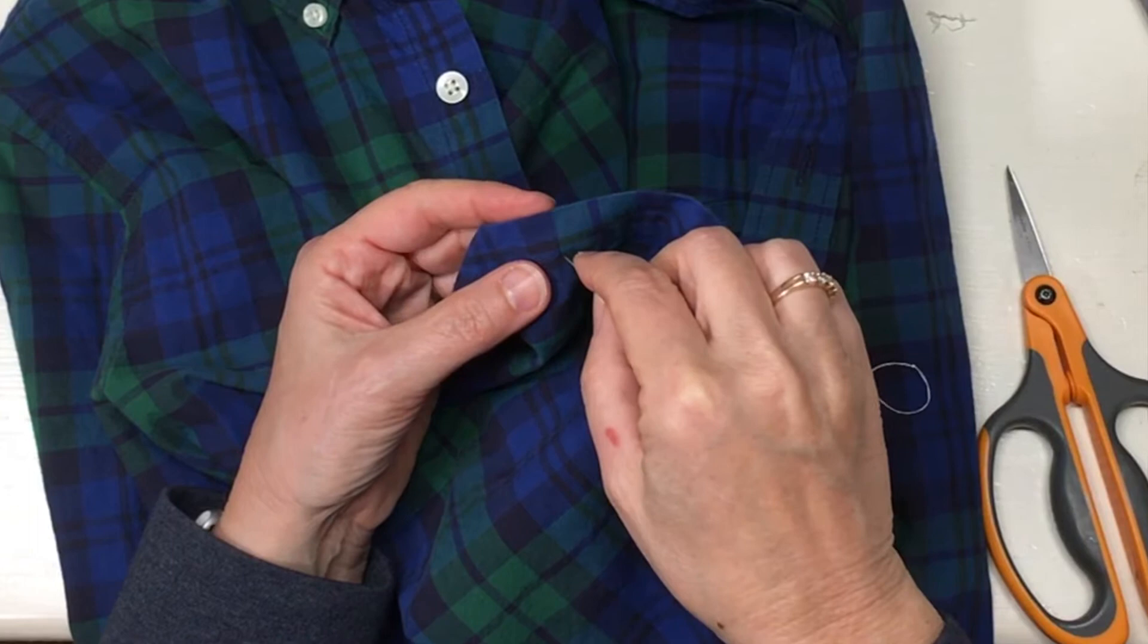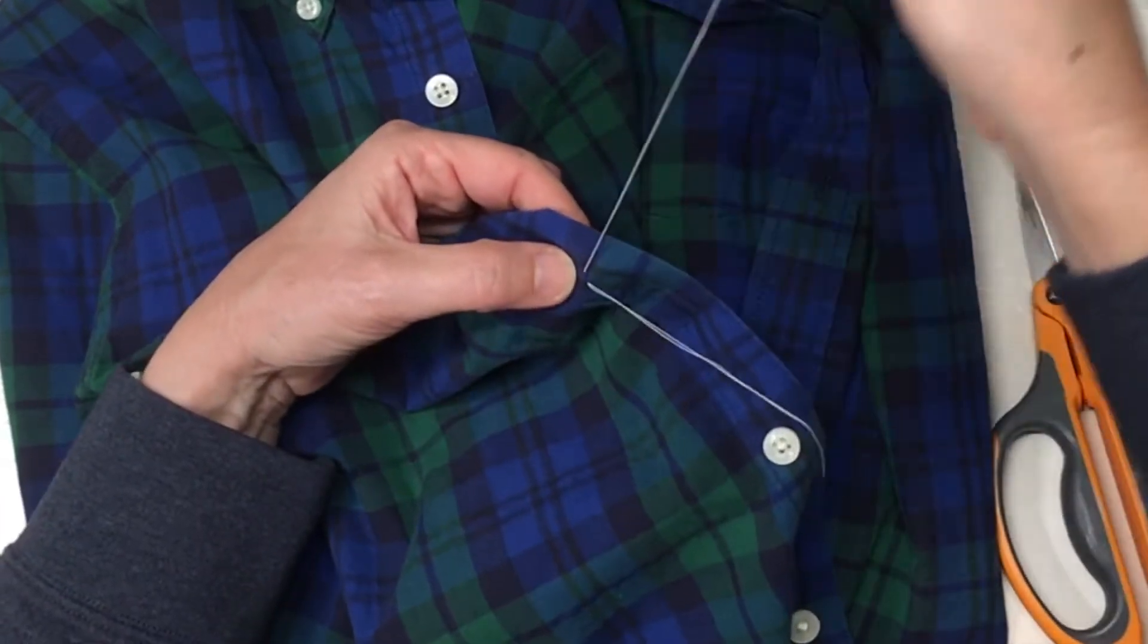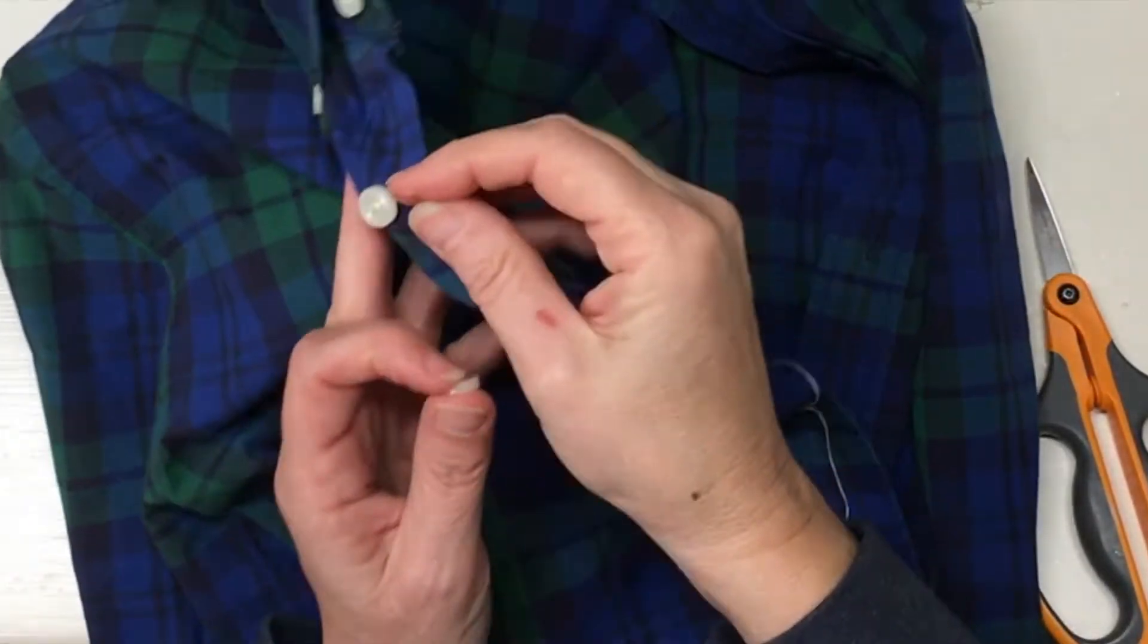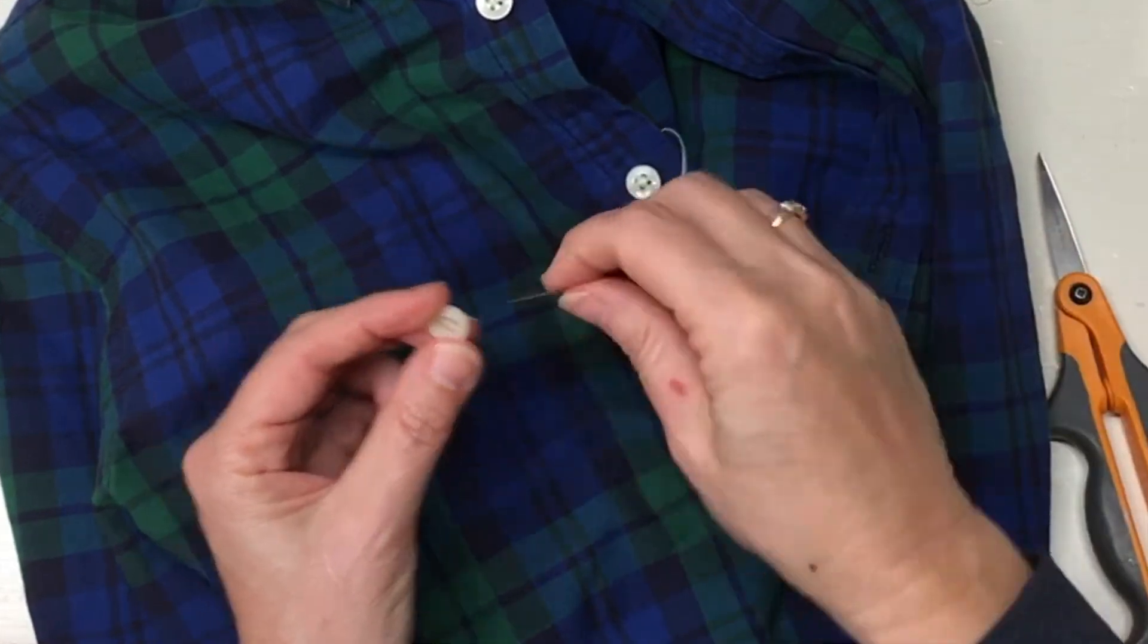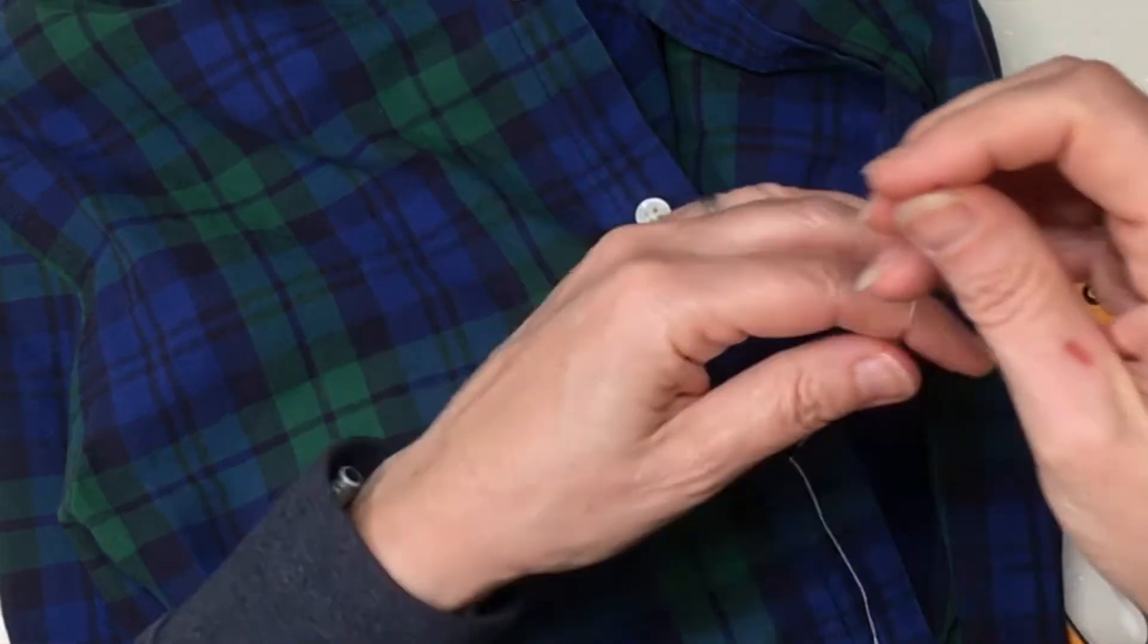I come in from the top of the fabric. That way when I tie the knot, it's in between the button and the shirt instead of on the inside of the shirt. Just looks neater, not necessary that you do it that way. I think it looks a little neater. So go in, go up out of your button.